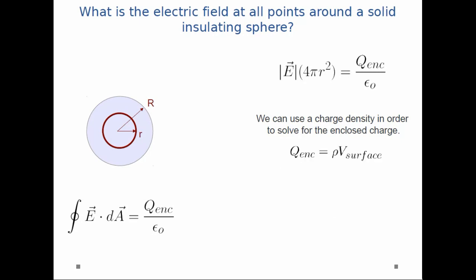Then, I know q enclosed is just that charge density times v surface, which is the volume enclosed by my Gaussian surface. I plug in the values for the charge density and the volume of the Gaussian surface. And they simplify down to Q r cubed divided by R cubed. And note that little r is the radius of the Gaussian surface. Big R is the radius of the sphere.